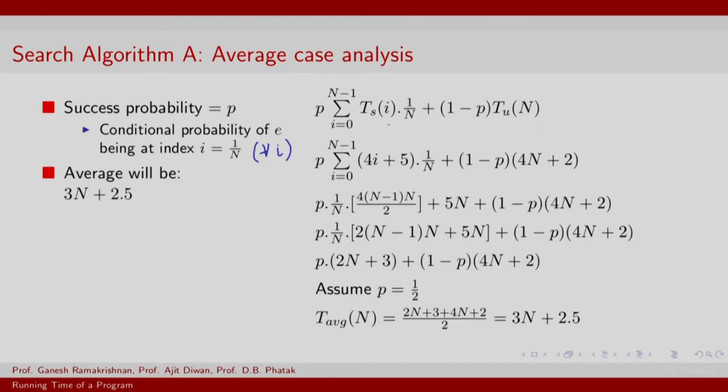So what is the average case? Well, you will need to sum over every possible location in the sequence and the time required for search if the element E was at position i and this is the probability of having that element in that position, plus 1 minus P that there is actually an unsuccessful search for a sequence of length n.